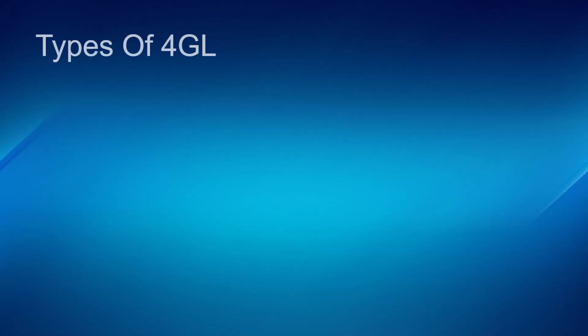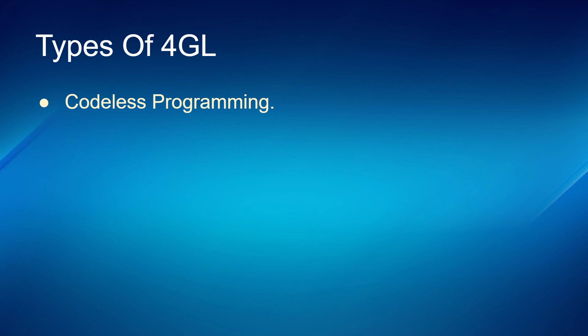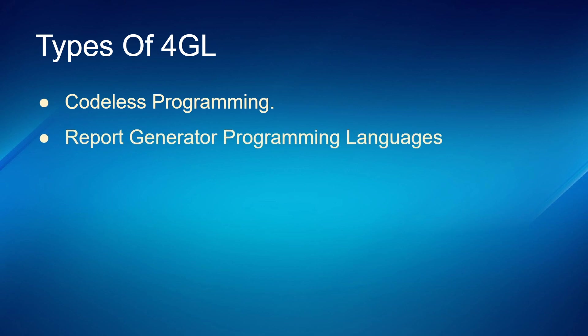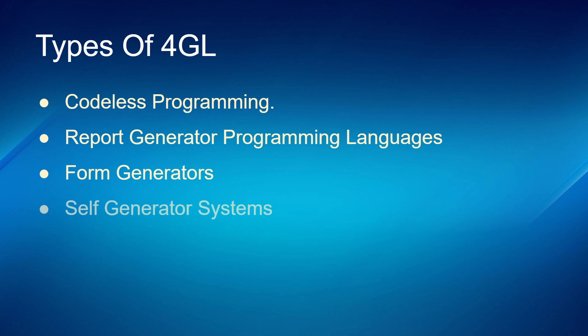Types of 4GL include things that are almost codeless programmers, report generators and programming languages, form generators, self-generated systems, and data management systems.